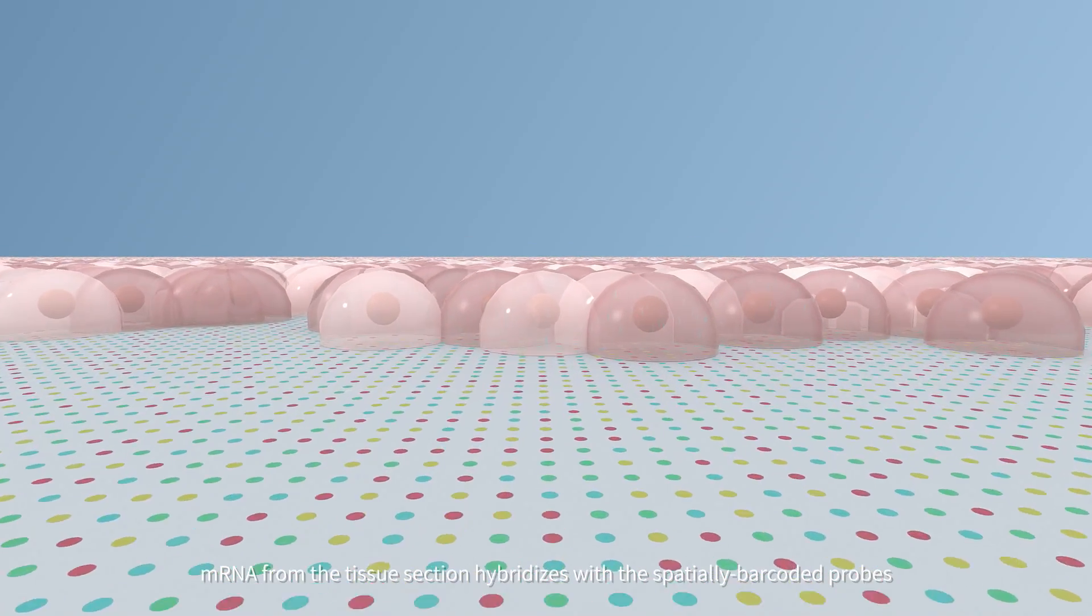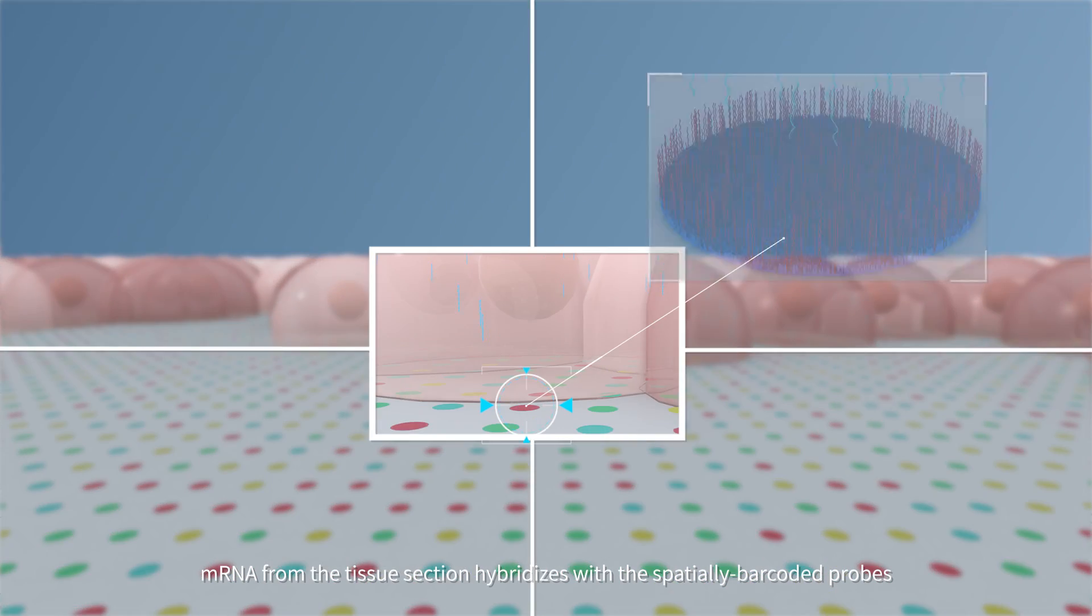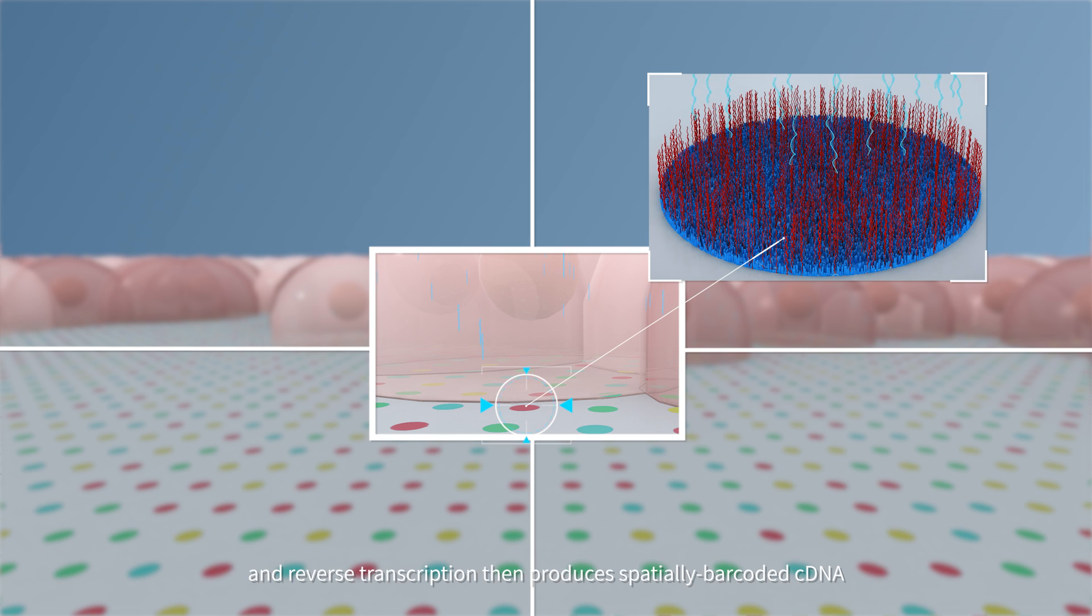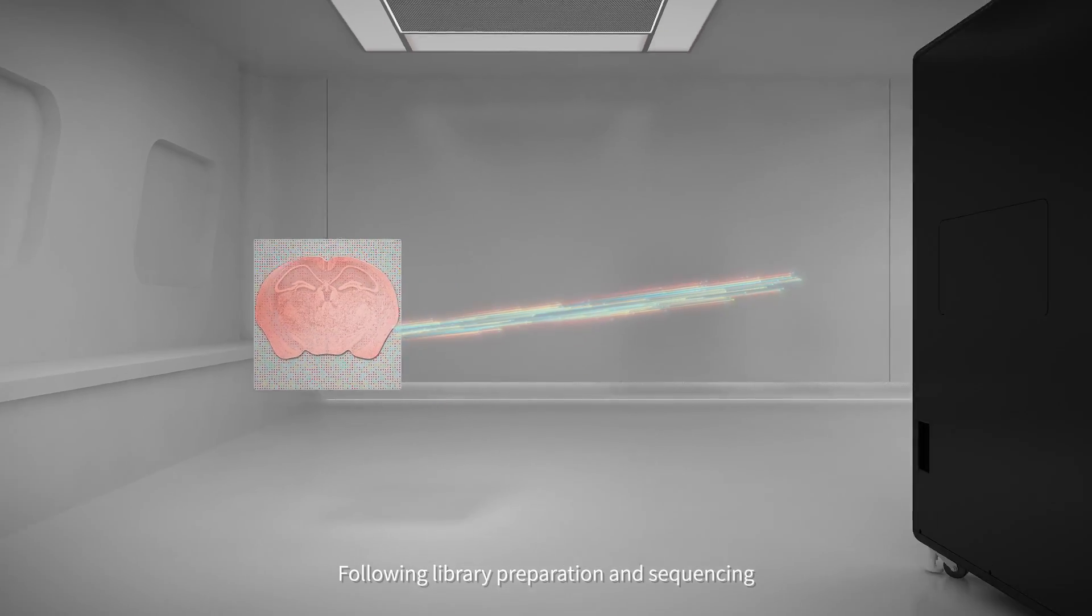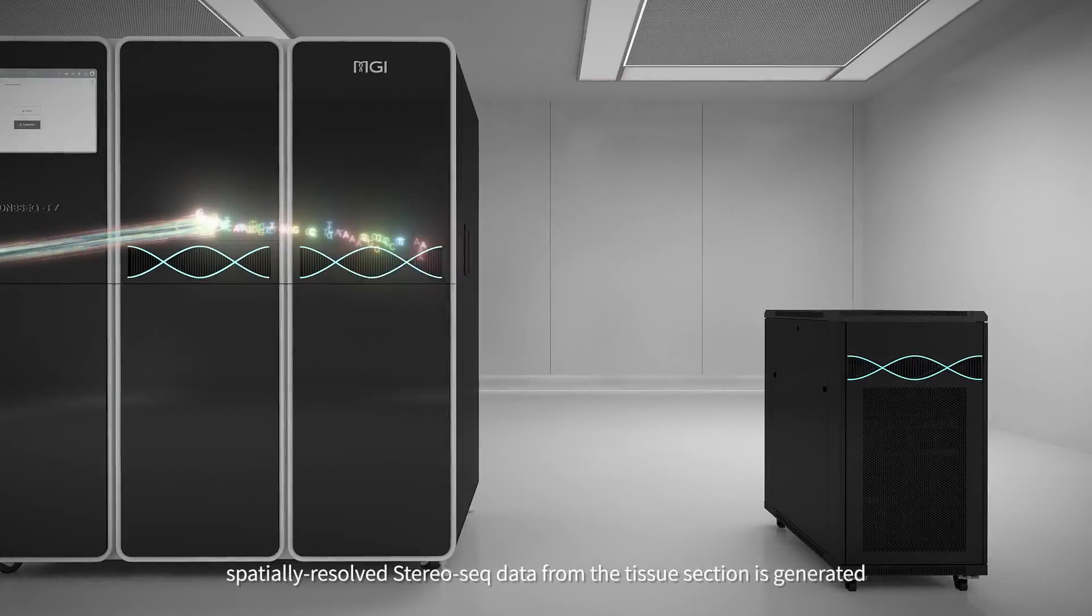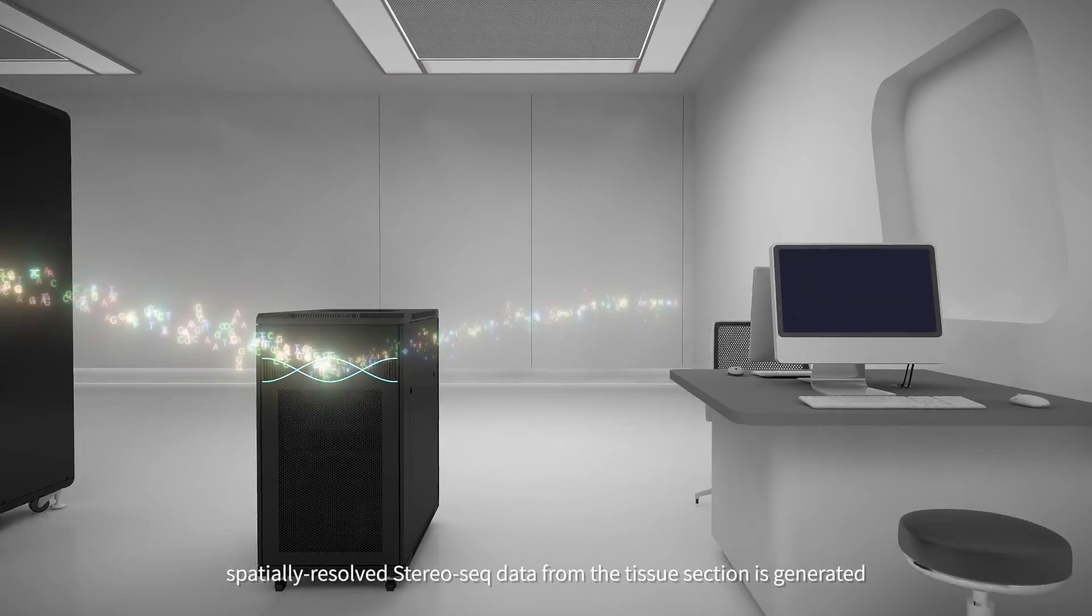mRNA from the tissue section hybridizes with the spatially barcoded probes, and reverse transcription then produces spatially barcoded cDNA. Following library preparation and sequencing, spatially resolved Stereo-seq data from the tissue section is generated.